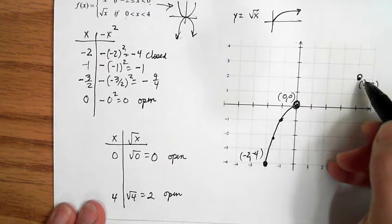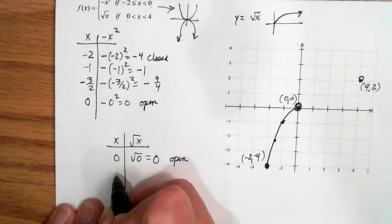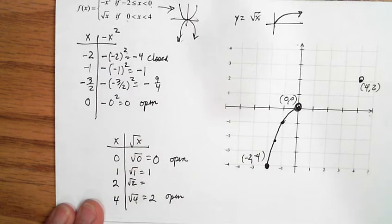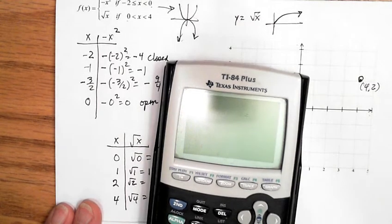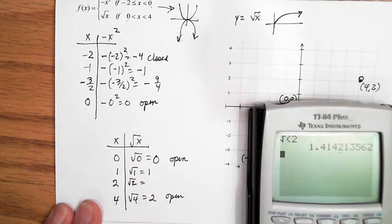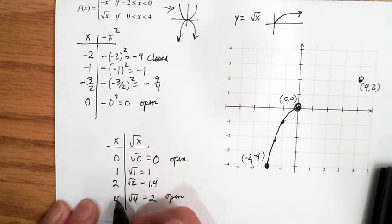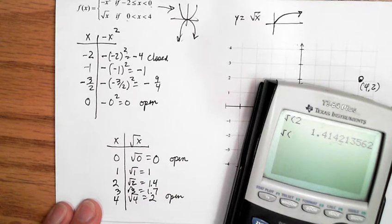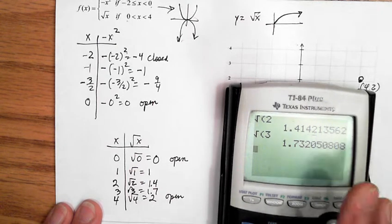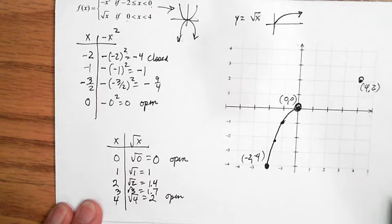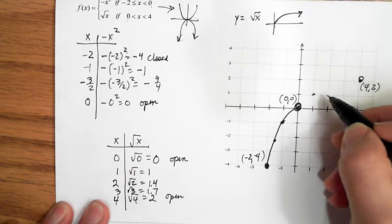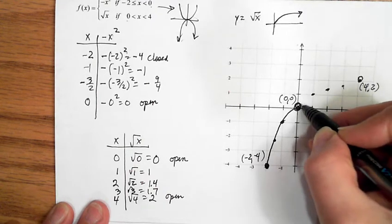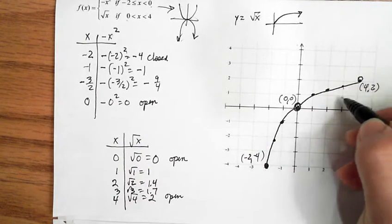Between the endpoints you don't want a straight line — you want curvature, so get some ordered pairs. At x = 1: √1 = 1; at x = 2: √2 ≈ 1.4; at x = 3: √3 ≈ 1.7. Plot these and connect with a gradual curve over to the open endpoint at (4, 2). There's that second piece of the graph.